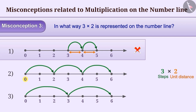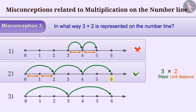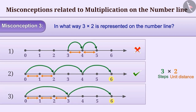So starting from 0, one has to take 3 steps of 2 units each. Therefore, the correct answer is option 2. Sometimes, instead of taking 3 steps of 2 units each, students take 2 steps of 3 units each. Although it gives the correct answer, this is an incorrect way of thinking as it represents 2 multiplied by 3. However, we have to represent 3 multiplied by 2, so option 3 is also an incorrect answer.